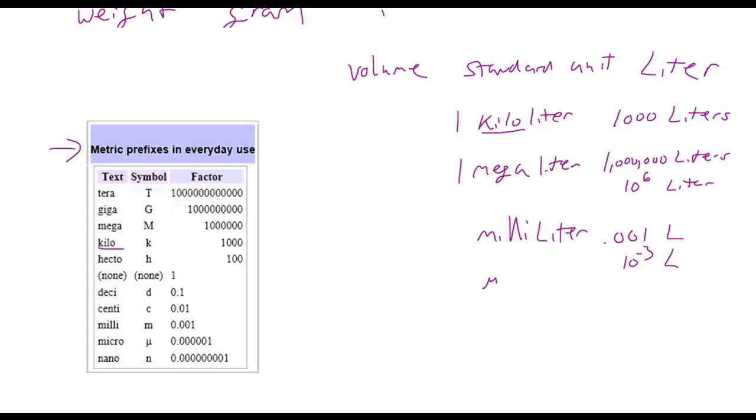Microliter, micro would be ten to the minus six liters. As we're working down, let's do nano since it's on here. That's ten to the minus nine liters. Notice what we've picked here on this table, particularly when we've done milli, micro, and nano. We've done threefold, or three tenfold, 1,000-fold is what I'm talking about, 1,000-fold differences.